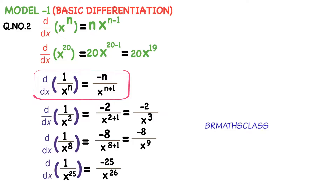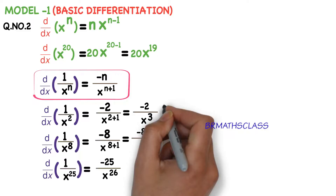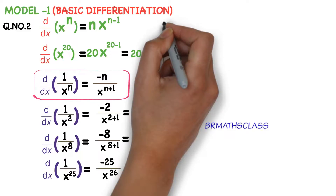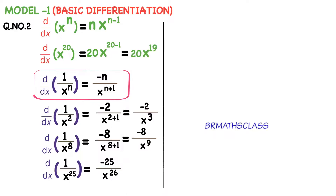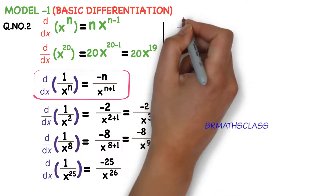What is that formula? The derivative of 1 by x power n is minus n divided by x power n plus 1. Now we will see how we use this formula.